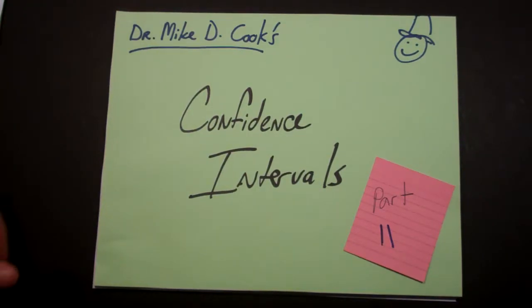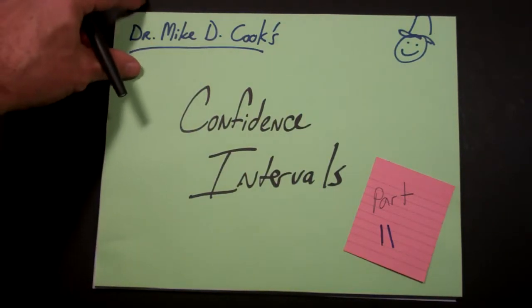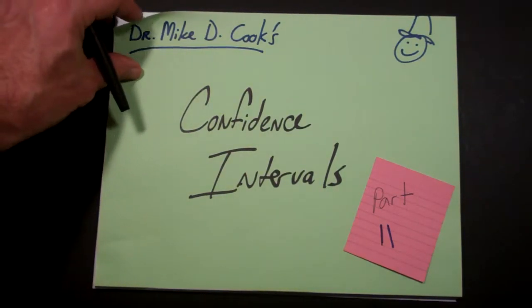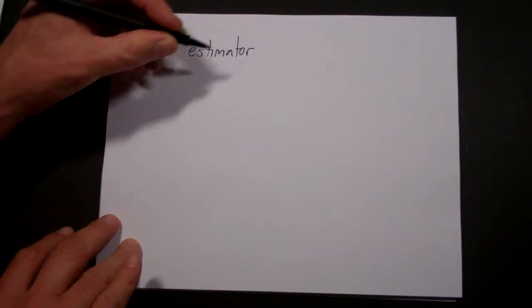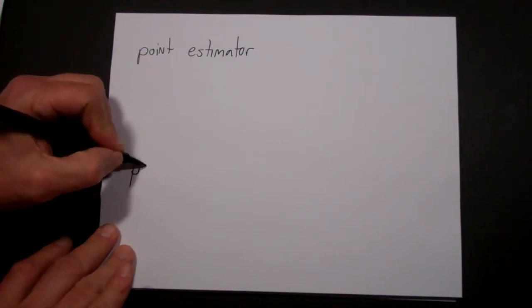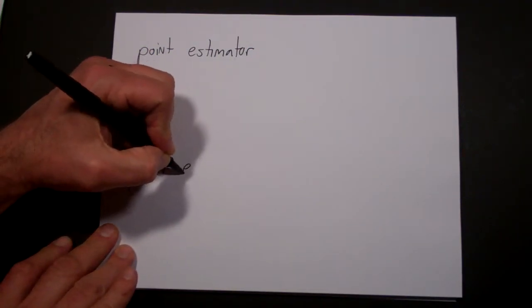This is the second of a series of videos on confidence intervals, and in this one we want to first start to talk about a couple of vocabulary terms. The first one is the idea of a point estimator and a point estimate.